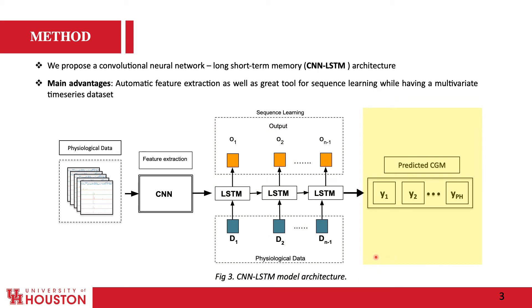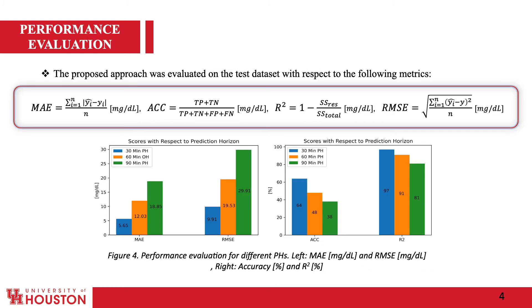At the output layer we get the predicted values for CGM with length equal to the prediction horizon. We train separate models for 30, 60, and 90-minute prediction horizons and achieved very good results. The bar plot in Figure 4 shows performance evaluation using Mean Absolute Error (MAE), Root Mean Square Error (RMSE), Accuracy (ACC), and Coefficient of Determination (R²) for the different prediction horizons.